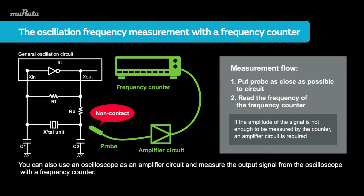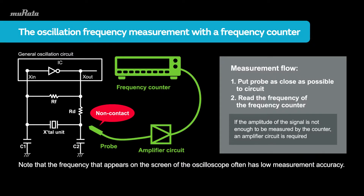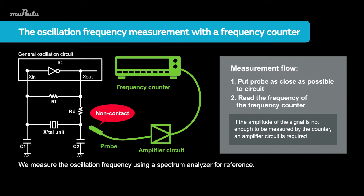You can also use an oscilloscope as an amplifier circuit and measure the output signal from the oscilloscope with a frequency counter. Note that the frequency that appears on the screen of the oscilloscope often has low measurement accuracy. We measure the oscillation frequency using a spectrum analyzer for reference.